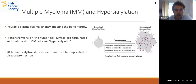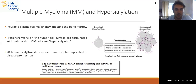Sialyltransferase activity is often dysregulated in cancer, and our group have previously implicated several sialyltransferases, including ST3-Gal6, in myeloma disease progression and survival. As well as facilitating abnormal cell trafficking and drug resistance, hypersialylation may also cause evasion of NK cell-mediated immunosurveillance, potentially leading to avoidance of killing by NK cells.